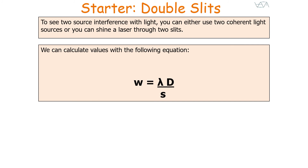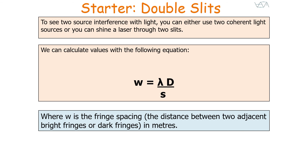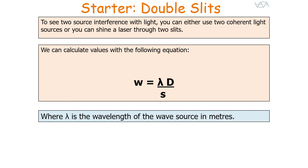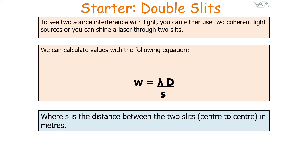We can calculate values from the Young's Double Slit Experiment using the equation W equals lambda D divided by S, where W is the fringe spacing — the distance between two adjacent bright fringes or two adjacent dark fringes — in metres. Lambda is the wavelength of the wave source in metres. D is the perpendicular distance between the slit and the screen in metres. And S is the distance between the two slits, measured from centre to centre, in metres.